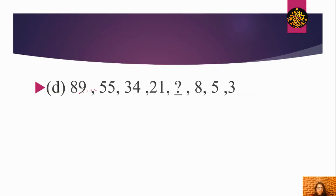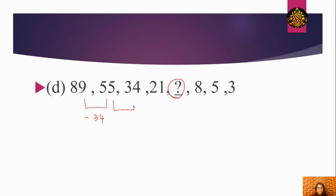Next question: 89, 55, 34, ?, 21, 8, 5, 3 — find the missing term. The sequence is also decreasing, so it is a subtraction method. The differences: 89−55=34, 55−34=21. Now looking at the known values at the end: 8−5=3. We need to find the middle digit.